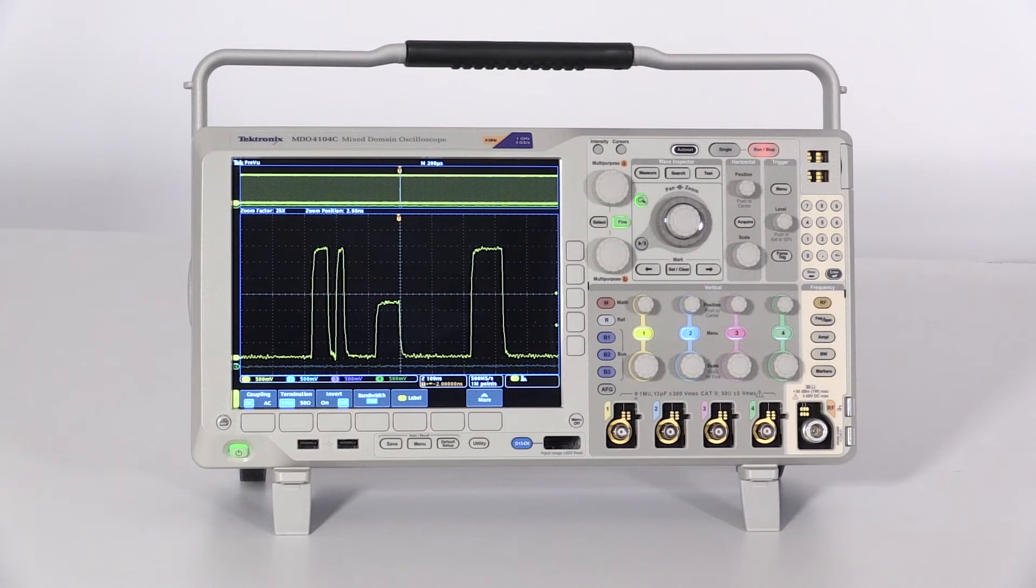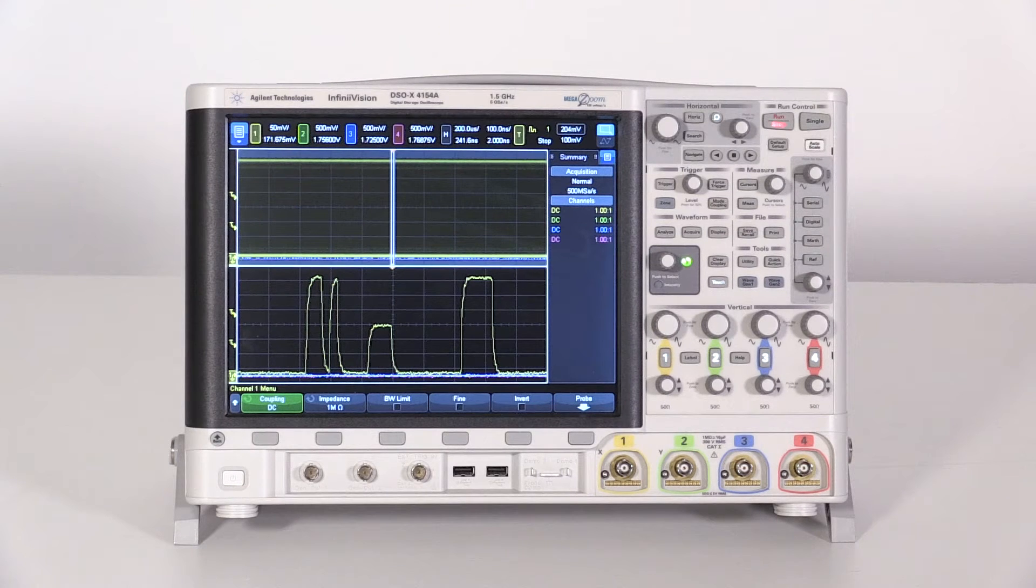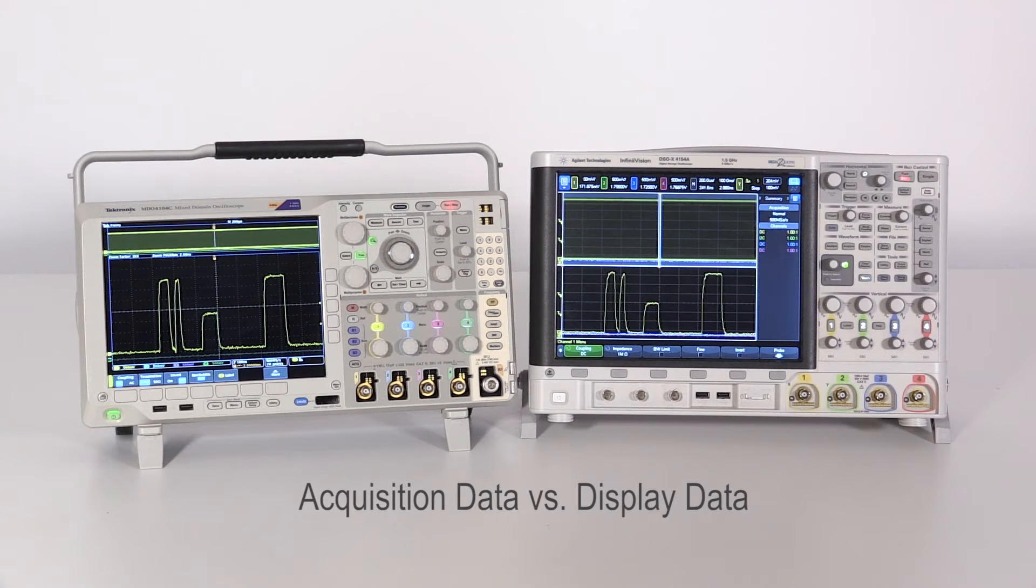The Tektronix MDO-4000C waveform measurements are performed on the acquisition data, while the Keysight X-4000A waveform measurements are performed on the display data. Let's see how this will affect our measurements when using different zoom settings as we measure the rise time of a specific pulse.